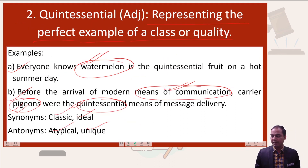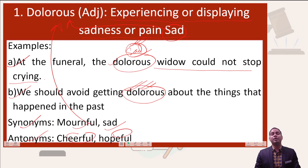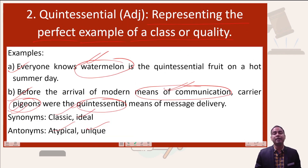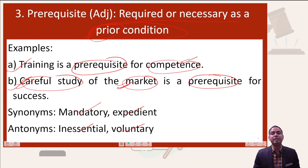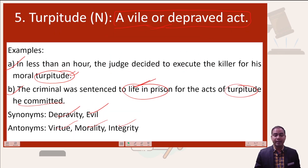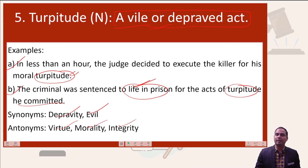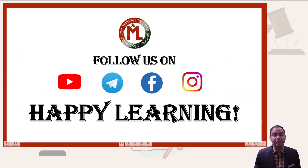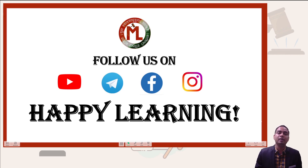Let us review the words we covered in today's session. First word: dolorous, means sad. Second: quintessential, means something which is very important or the perfect example. Third: pre-requisite, a prior requirement of something. Fourth: abrogation, means to repeal, annul, or revoke. And fifth: turpitude, means morally bad activity. I hope you have understood all the words discussed in this video. Thank you so much for watching till the end. Stay tuned, stay learning. All the best.